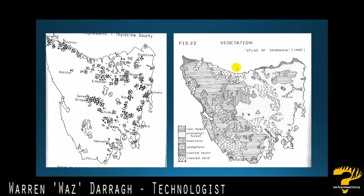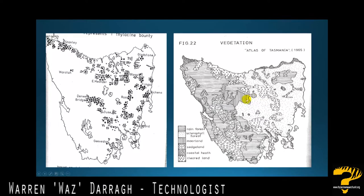Here you can see that, by the key, the sclerophyll forests — the dots — are the predominant areas where we have thylacine bounties being taken. Then after that you have cleared land, marked with X's, where people have come in and cleared it — maybe farmland. Then we have coastal heath at number three, and number four is the sedge land area. So there are a few areas with some sedge land activity. Basically sclerophyll forest number one, followed by cleared land.